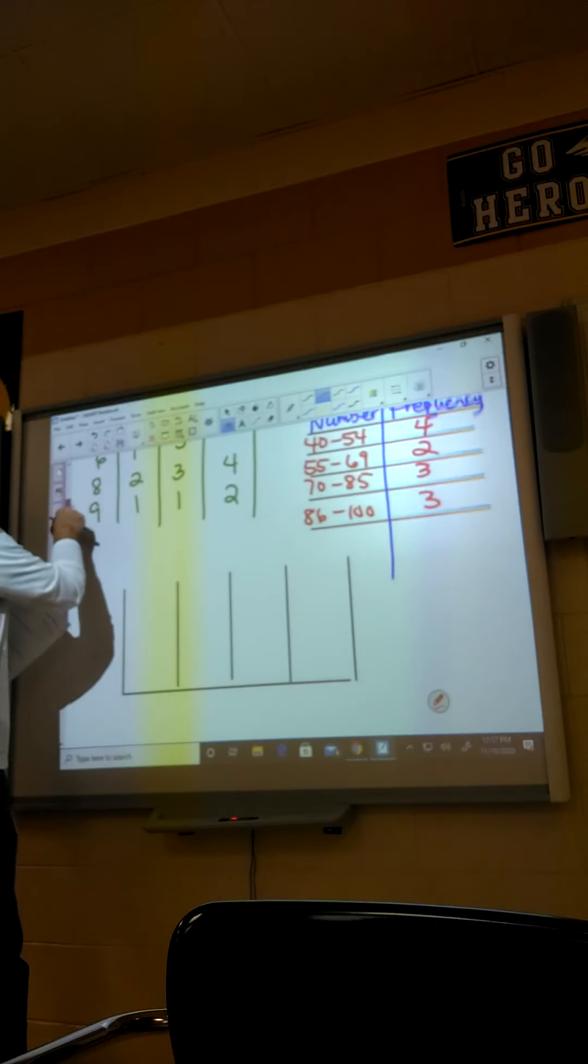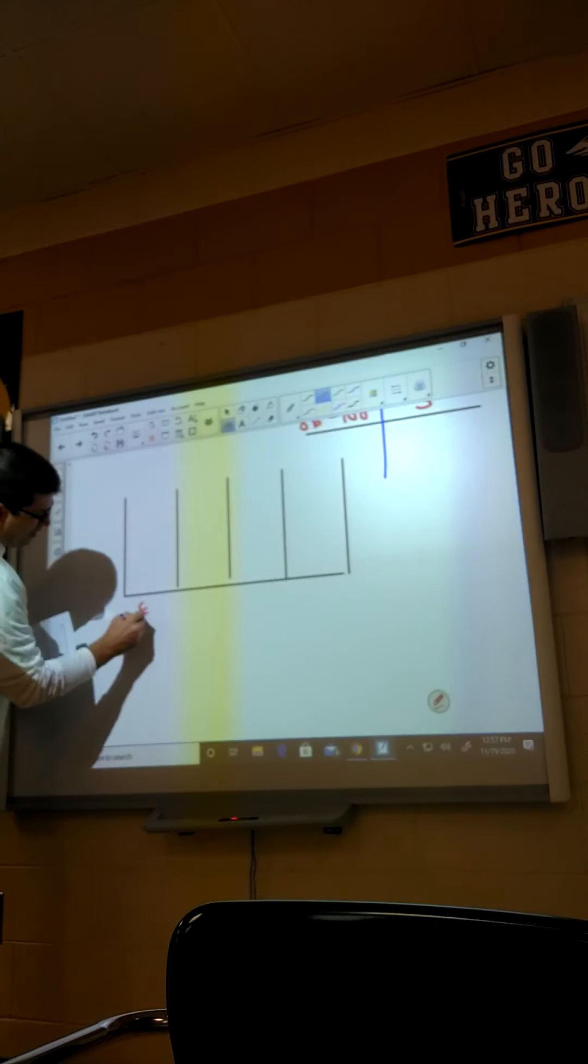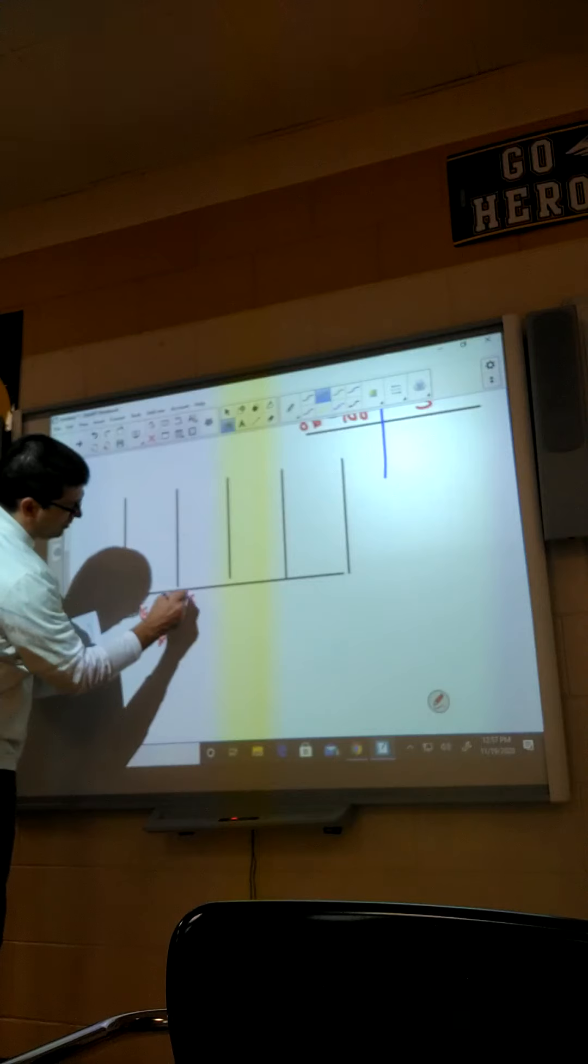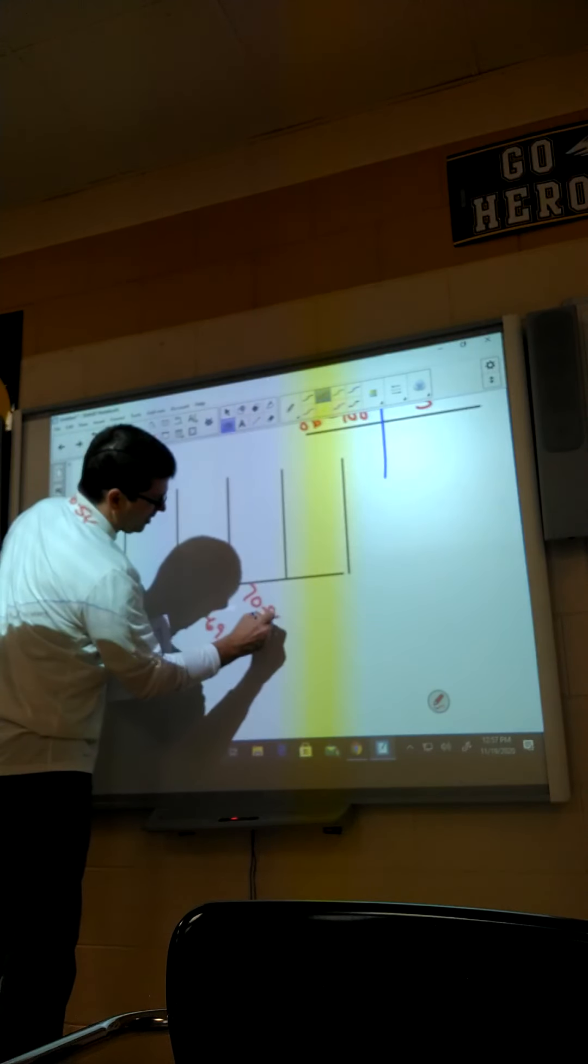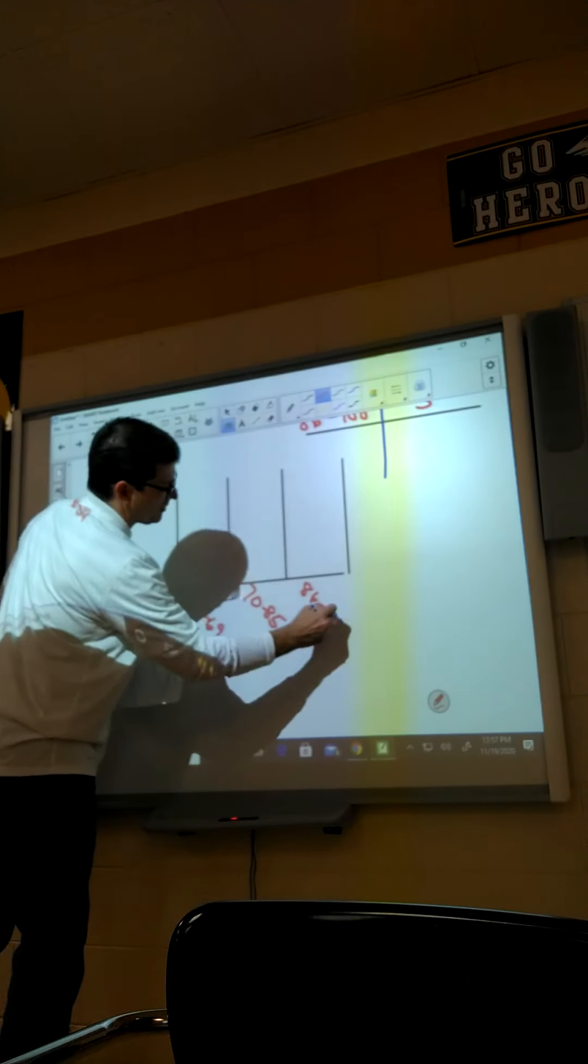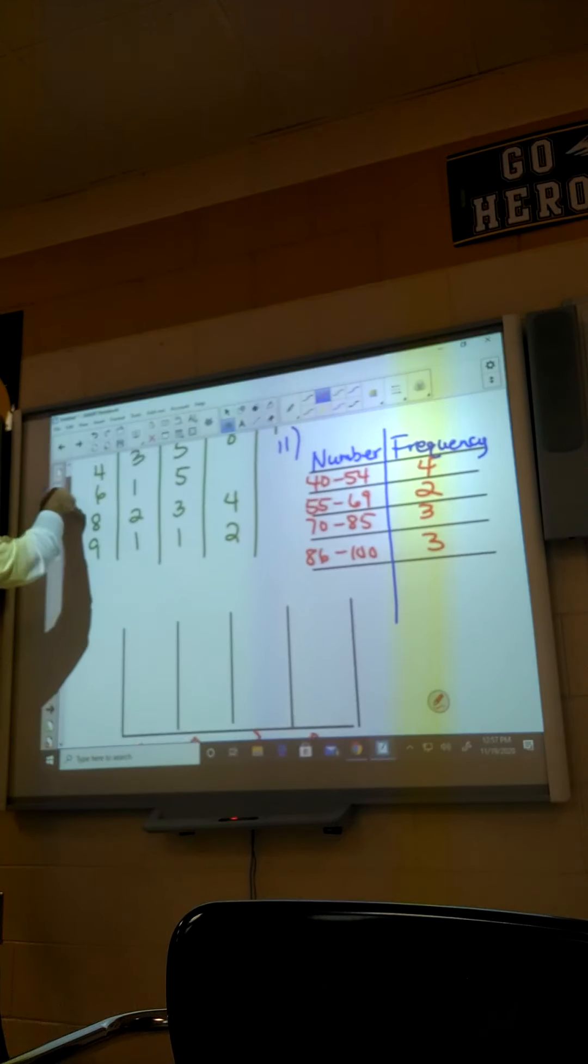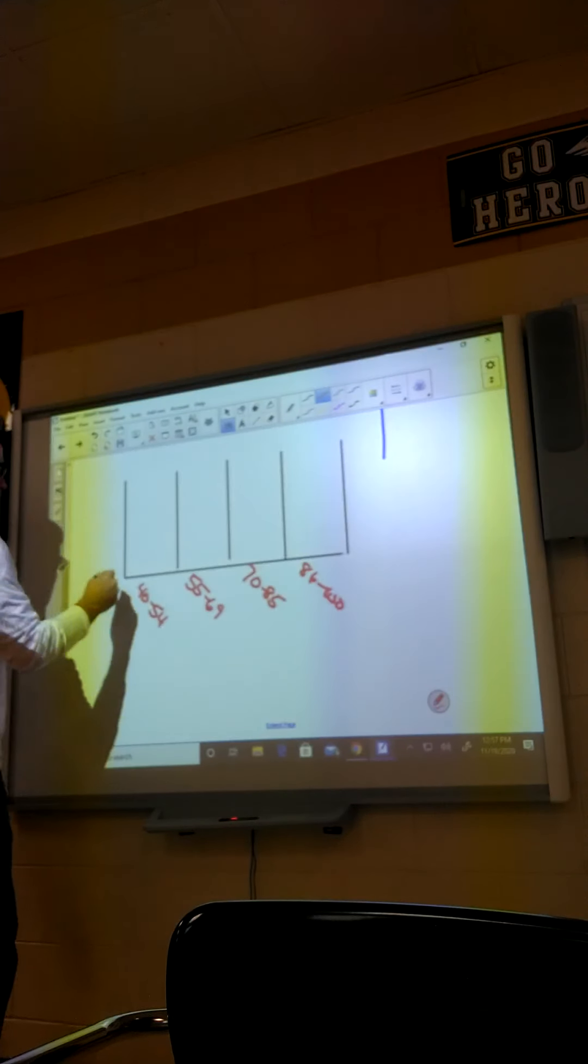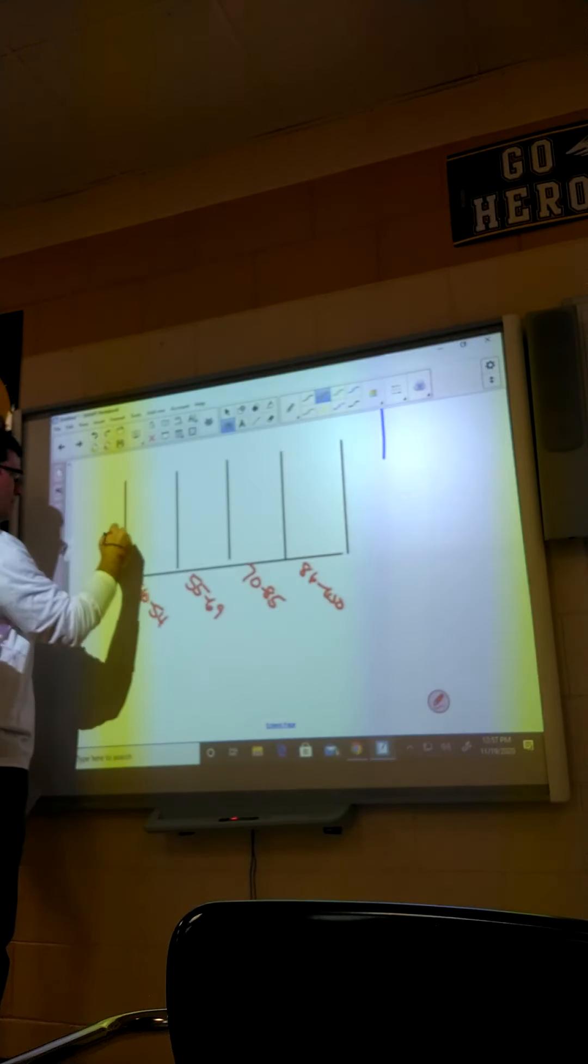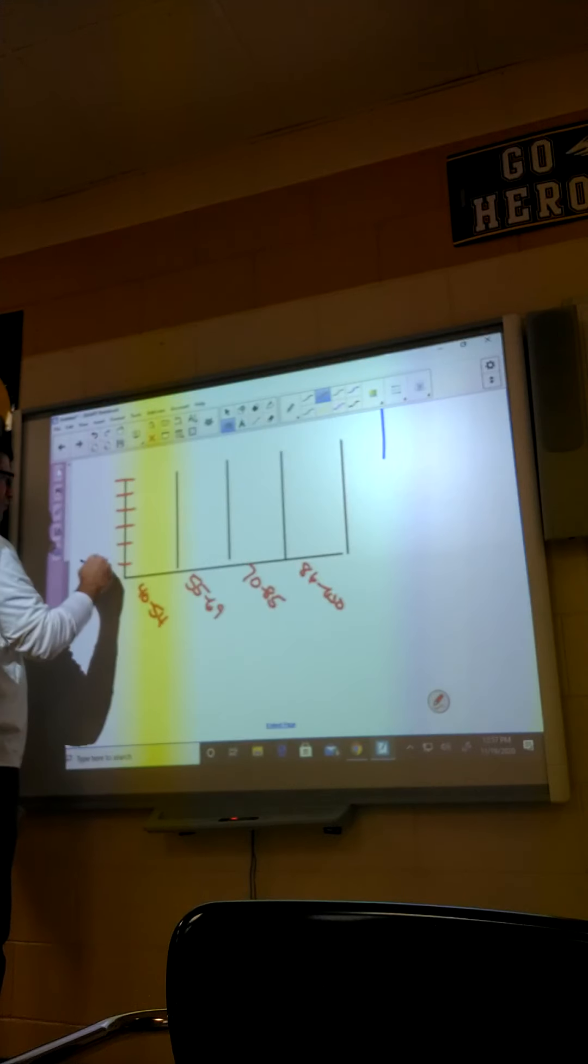All right, so I got 40 through 54, 55 through 69, 70 through 85, and 86 to 100. I think that's what we had. Okay, as long as you got them all set up about the same. One, two, three, four, five, six.